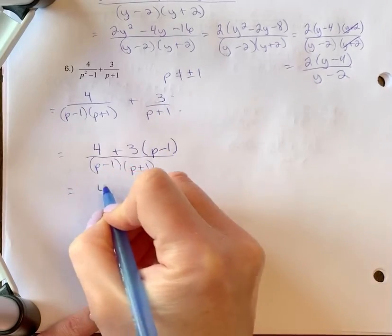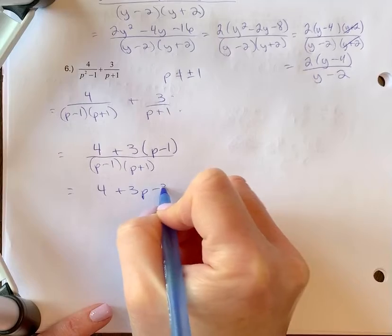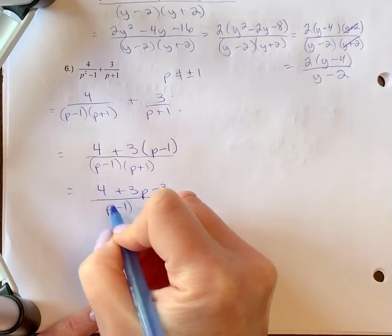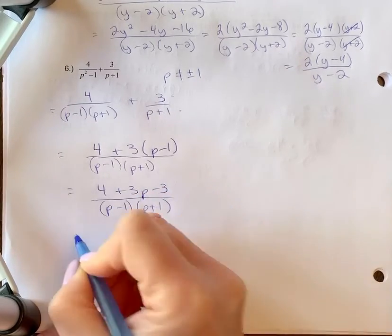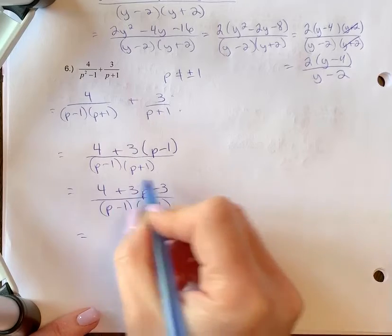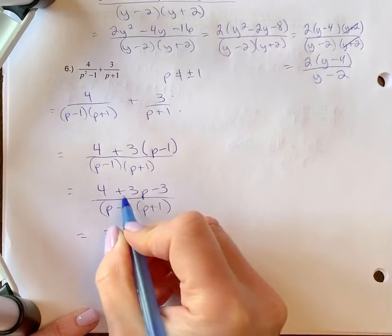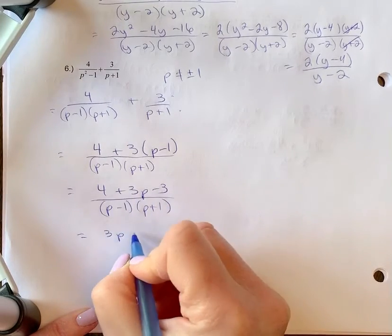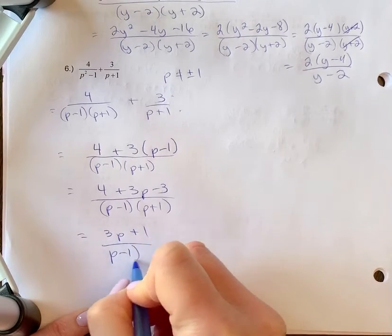Now let's simplify the numerator by multiplying the three through. We need to continue to write that denominator, it doesn't just disappear. Combine like terms, so we have three p, four minus three is plus one, over p minus one times p plus one.